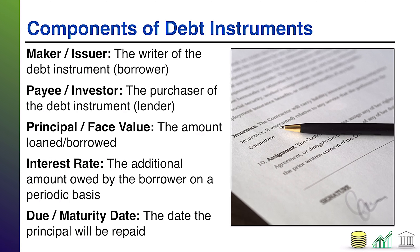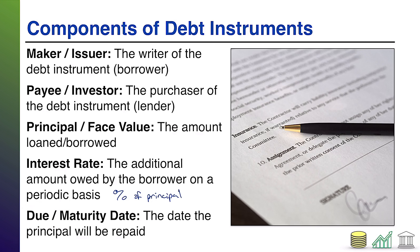Then you have the interest rate — this is how the lender makes money. It's the additional amount owed by the borrower on a periodic basis — some percent of that principal. On a certain periodic basis, whether quarterly, monthly, or yearly, you pay X percent of that principal as interest. Finally, you've got the due date or maturity date. Due date is used for notes; maturity date for bonds. This is the date the principal needs to be repaid.